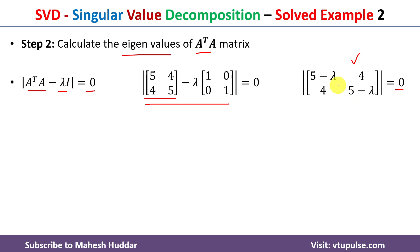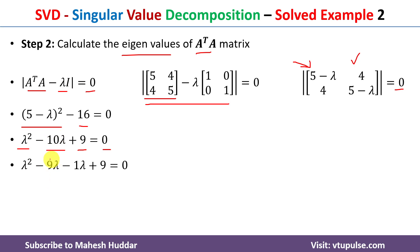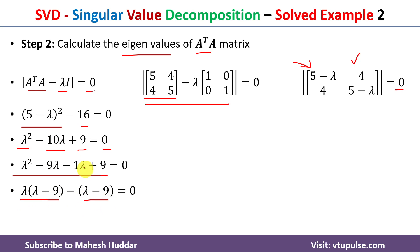To compute the determinant, we take the product of the diagonal elements minus the product of the off-diagonal elements: (5−λ)(5−λ) − 4×4 = 0, which gives (5−λ)² − 16 = 0. Expanding: 25 − 10λ + λ² − 16 = 0, simplifying to λ² − 10λ + 9 = 0. Factoring: (λ−9)(λ−1) = 0, so the eigenvalues are λ = 9 and λ = 1.